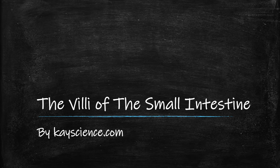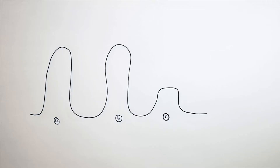The villi of the small intestine by KScience.com. In this video we're going to look at the adaptations of the villi. Villi are folds in cells. In this example you've got three villi: A, B and C.